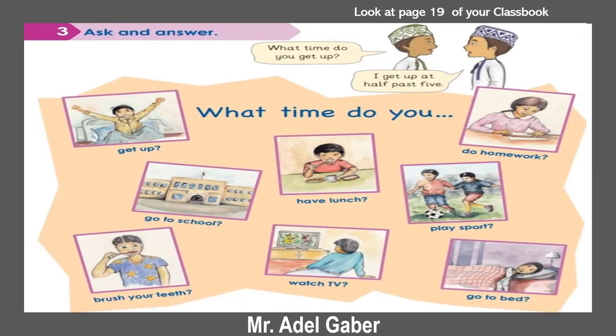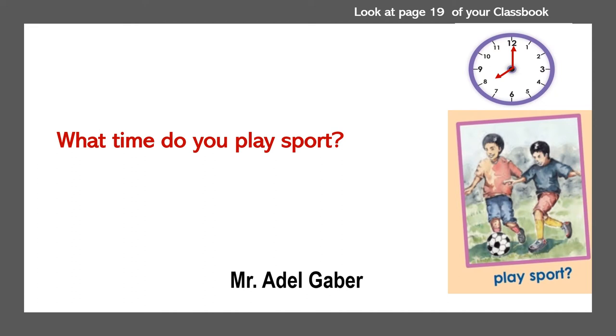Look at page 19 of your class book, activity 3, ask and answer. Read the dialogue between the two boys in the pictures at the top right of the page. What time do you get up? I get up at half past 5. Now you are going to ask and answer about the other pictures. Look at the picture and the clock and answer the question.